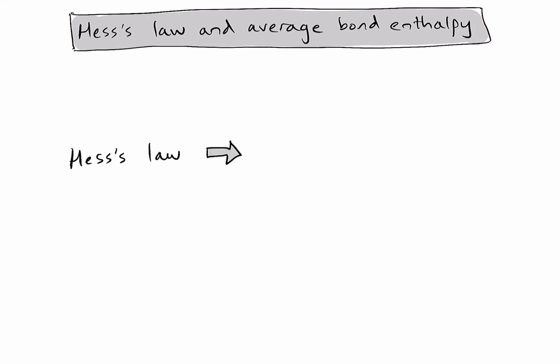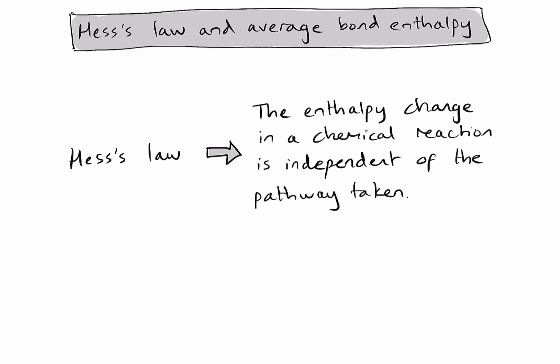Hess's law states that the enthalpy change for a chemical reaction is independent of the pathway taken. So if I can find an alternative pathway for a chemical reaction to occur, I can add together the enthalpy changes in that pathway and they will total to give exactly the same value as the direct enthalpy change of that chemical reaction.